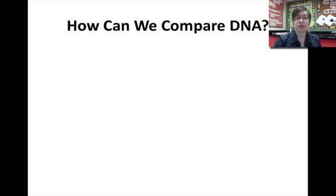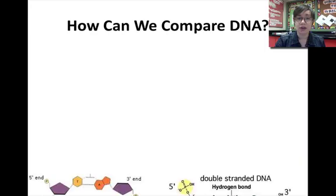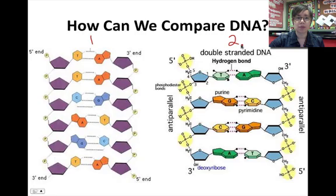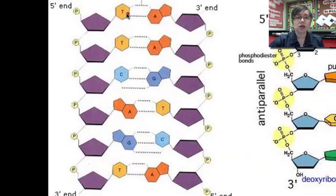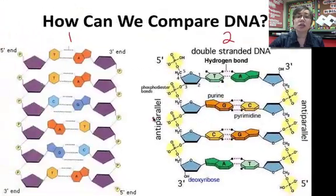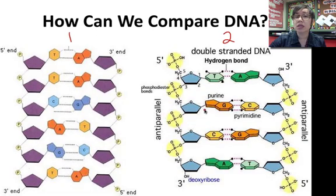The next thing we need to ask ourselves is: how can we compare DNA? Well, when we compare DNA, we're basically just looking at the letters. Here are two DNA molecules — I'll label them one and two. When I'm comparing DNA, I want to make sure I'm actually looking at the letters. So here I have T, T, C, A, G, T — and if I look at this DNA molecule, I have T, G, C, A. Clearly these are two different molecules because they have a different sequence of letters. And that different sequence can mean the difference between having a human being or having a banana plant.